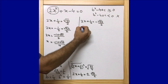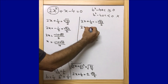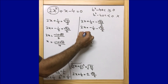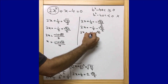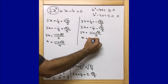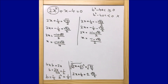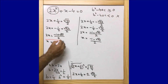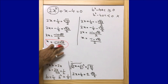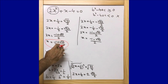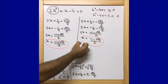For the second case: 2x + 1/2 = -√33/2, so 2x = -1/2 - √33/2, giving 2x = (-1 - √33)/2, and x = (-1 - √33)/4. So the two real roots are x = (-1 + √33)/4 and x = (-1 - √33)/4.